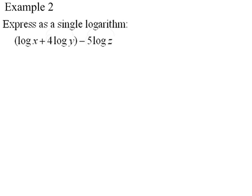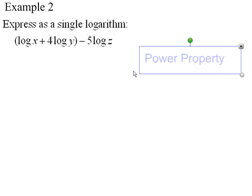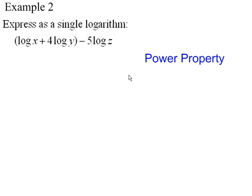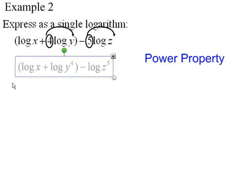Here's our second example. Express as a single logarithm: log x plus 4 log y in parentheses minus 5 log z. To begin, we are going to use the power property. It's always a good idea to use the power property first. That power property is going to let us move that 4 and make it an exponent of y, and move that 5 to make it an exponent of z.